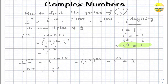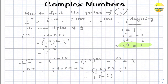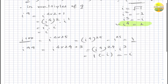Let's take i to the power 99. It can be written as 4 times 24 plus 3. In the same way, i to the power (4×24) times i cubed — this term becomes one, since i to the power four is one and one to the power 24 is one. And i cubed is minus i, so the final answer is minus i.